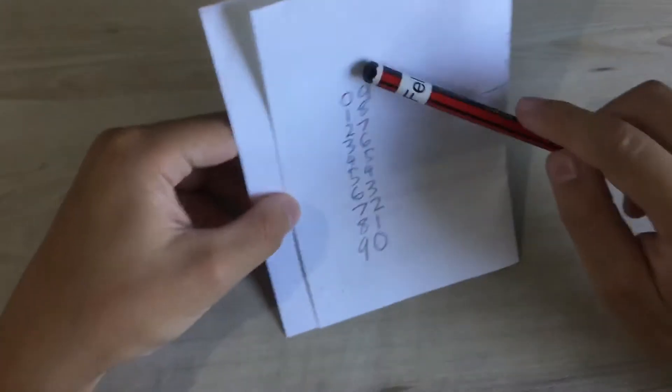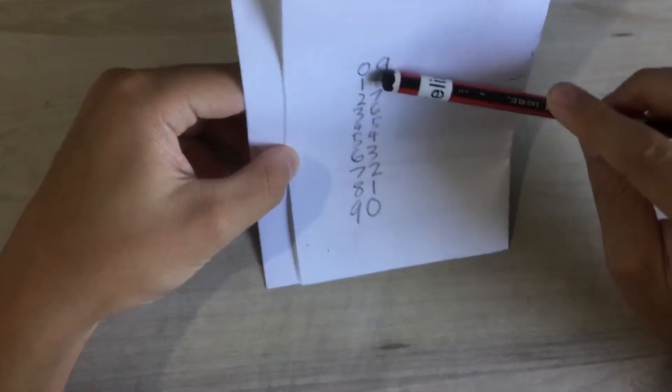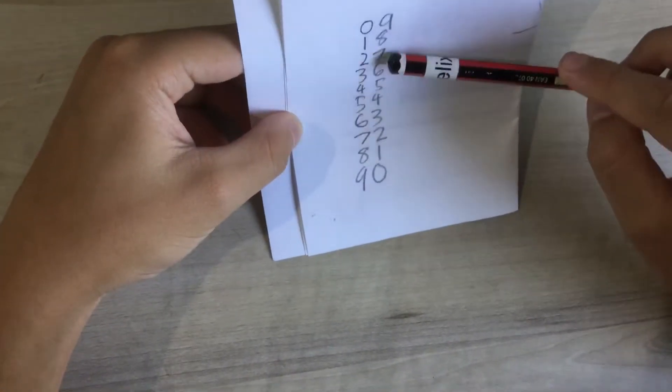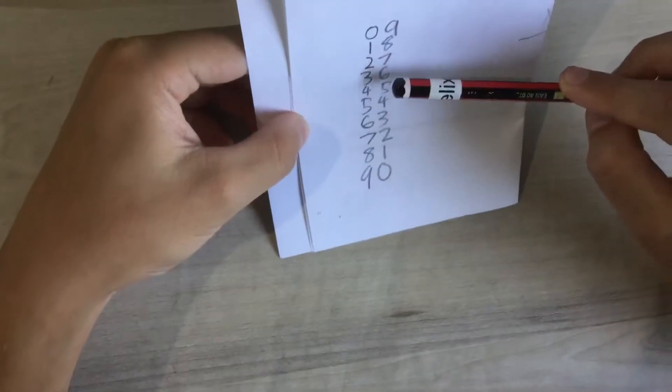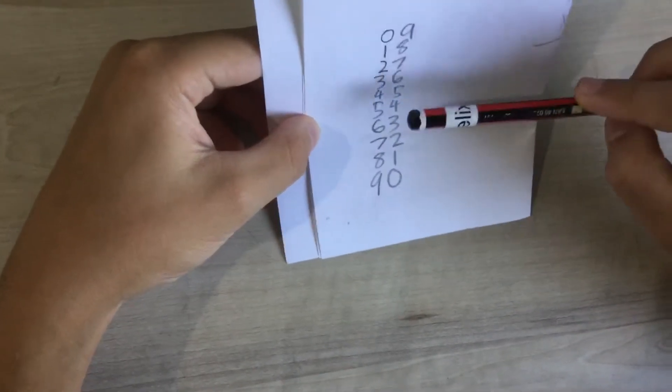That is basically your 9 times tables. You start with 9. 9 times 2 is 18. 9 times 3 is 27. 9 times 4 is 36. 9 times 5 is 45.